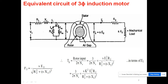Due to the electromagnetic induction principle, a voltage is induced in the rotor side. In the air gap the rotating magnetic field rotates, and because the rotor conductors are stationary, there is a relative motion producing an induced EMF — this is E₂. The interaction between the rotor current and the rotating magnetic field produces electromagnetic torque, causing the rotor to rotate.